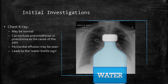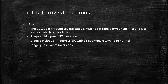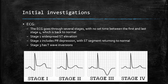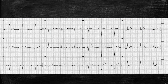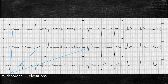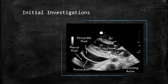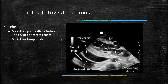The ECG in pericarditis goes through several stages, although 50% of patients do not go through these stages at all. Stage 1 includes widespread ST elevation. Stage 2 includes PR depression with the ST segment returning to normal — this PR depression is highly suggestive of pericarditis. Stage 3 has T wave inversions, and stage 4 returns back to normal. Here is an example ECG showing widespread ST elevations and PR depressions in several leads. An echo is also useful to rule out valve abnormalities and may show pericardial effusion in 10% of cases. It may also show tamponade, but this remains a clinical diagnosis.